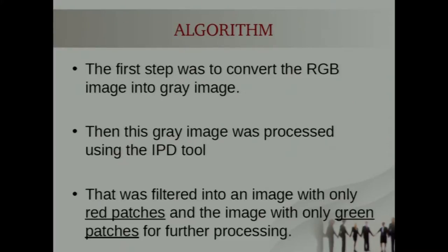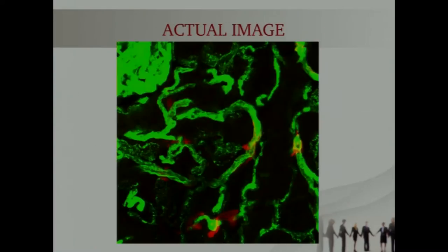The algorithm was the first step was to convert the RGB image which was having 0 to 255 pixels of every color red, green and blue. It was converted into a standard grey image first. That grey image was further processed and standardized using the IPD tool. Then it was filtered in only red patches and the green patches. This is the image which is being captured from the confocal microscopy.